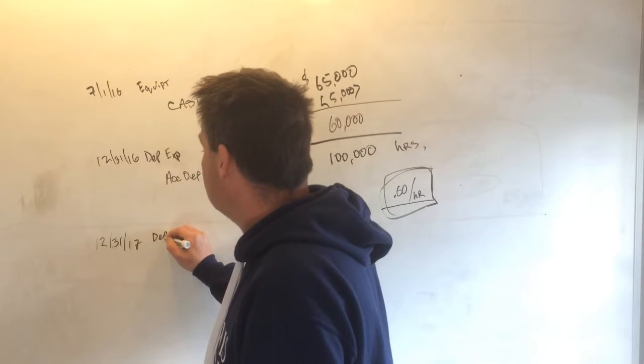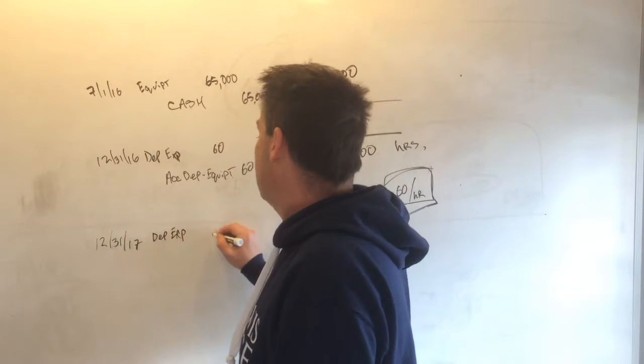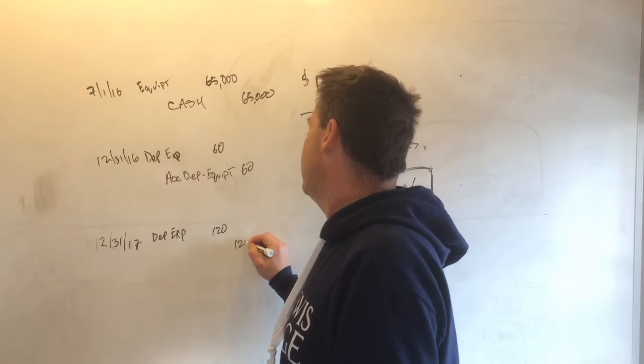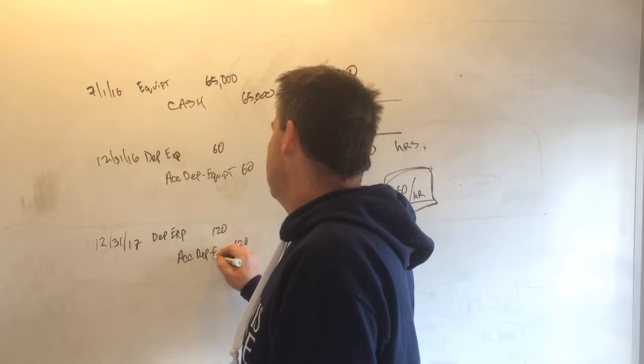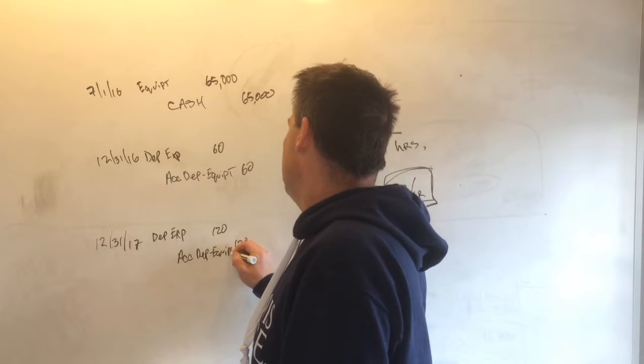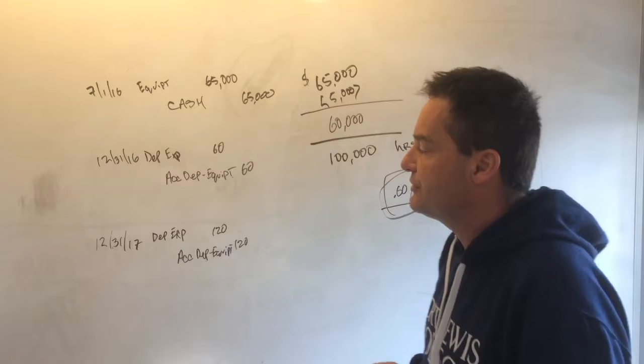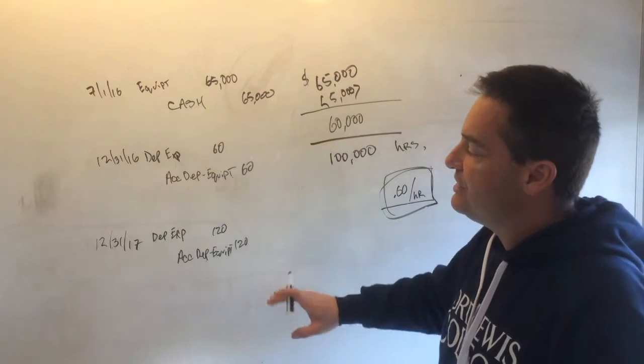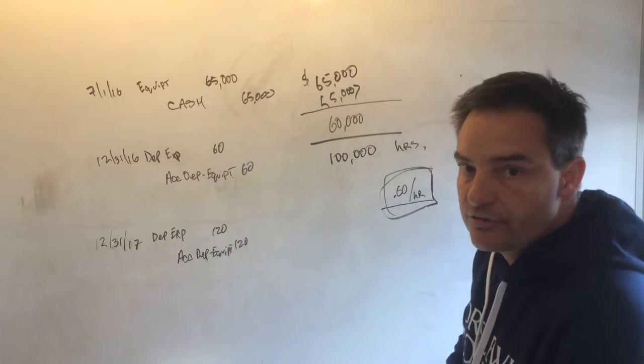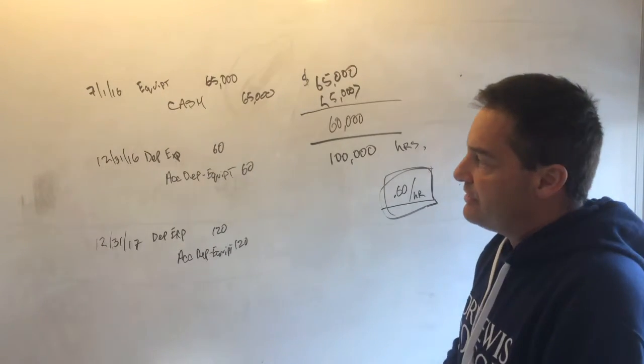For that year, you would debit depreciation expense for the $120, you would credit accumulated depreciation equipment for the $120. This was if you only did 100 hours during 2016, and 200 hours in 2017. So that's really simple.